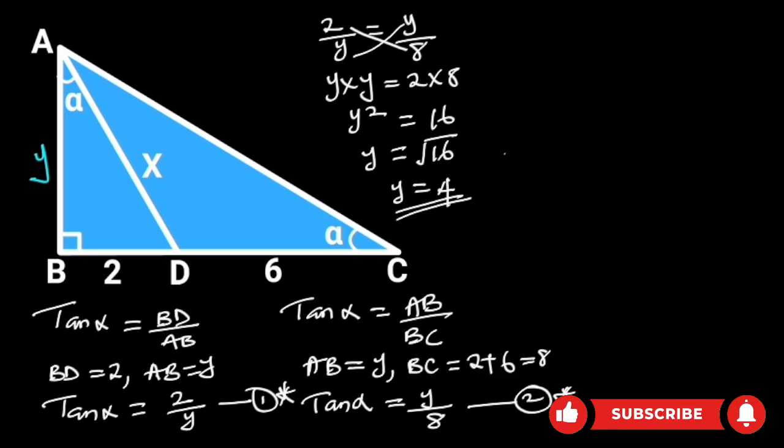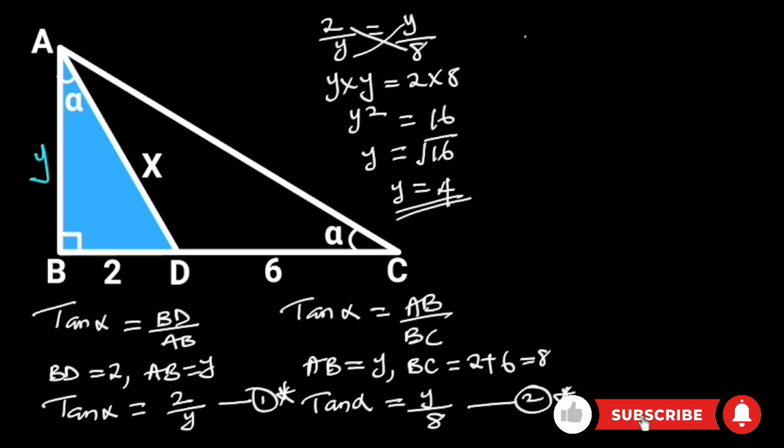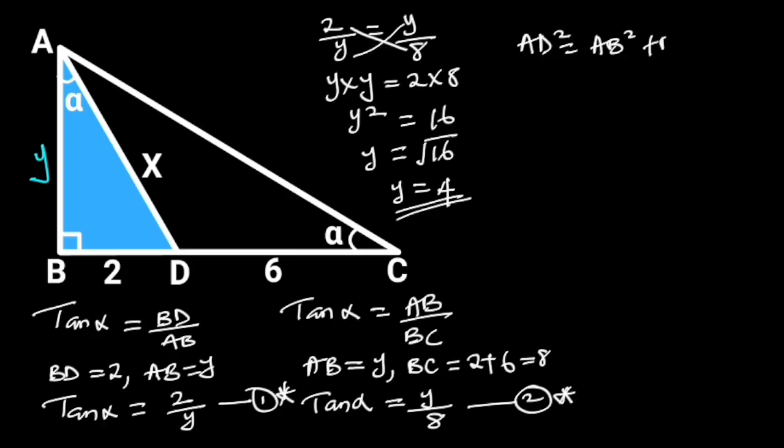Going further, let's consider triangle ABD. Since triangle ABD is a right triangle, from Pythagoras theorem, AD squared is equal to AB squared plus BD squared.